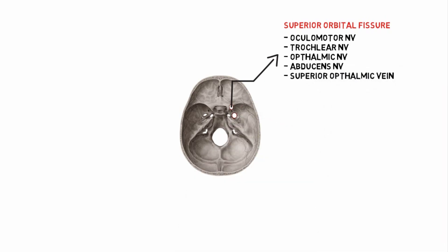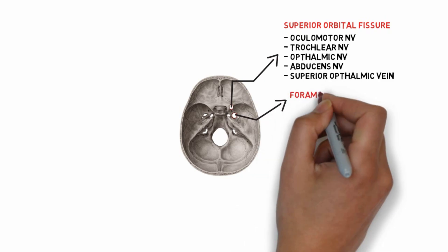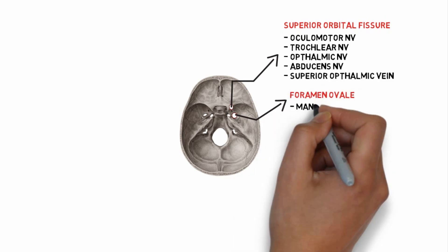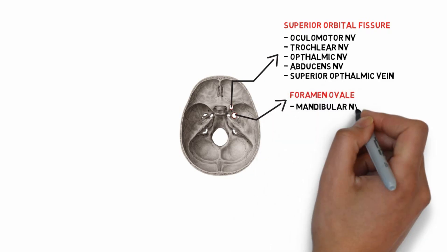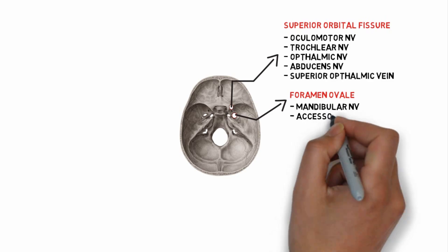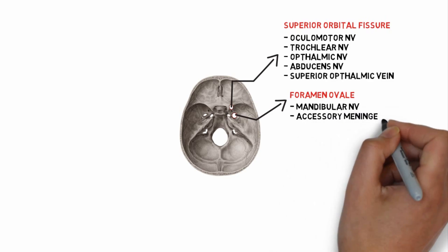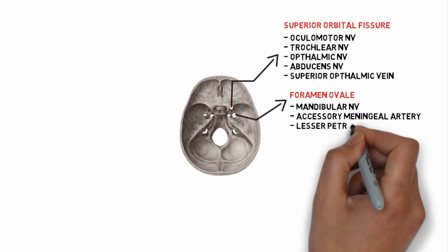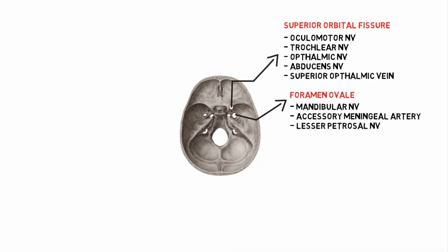The second one is the foramen ovale. Structures passing through it include the mandibular nerve, the accessory meningeal artery, and the lesser petrosal nerve.